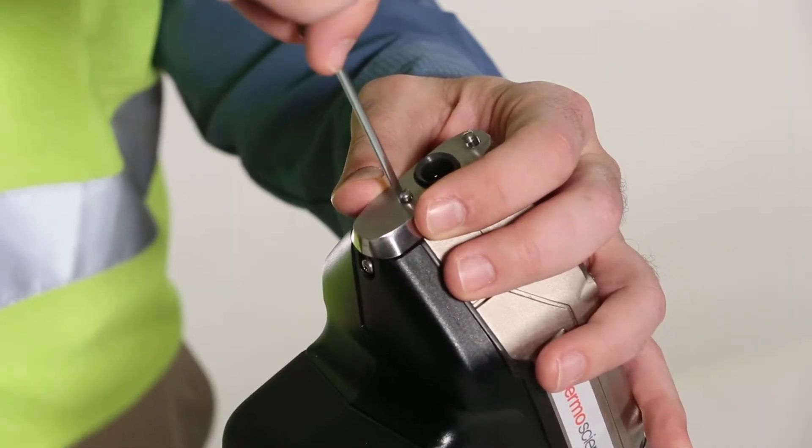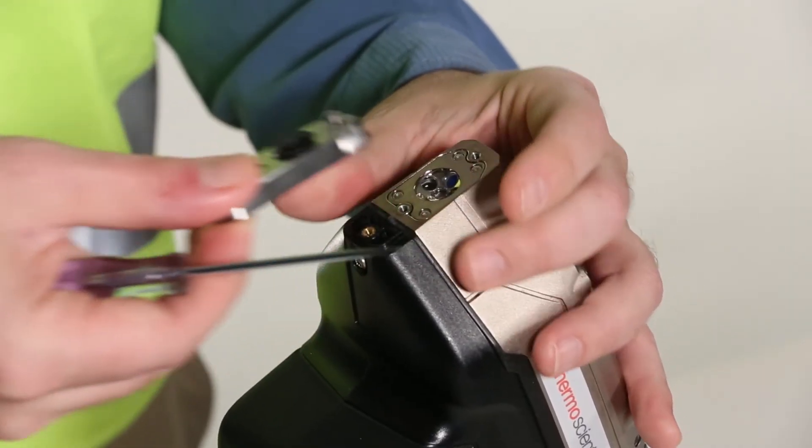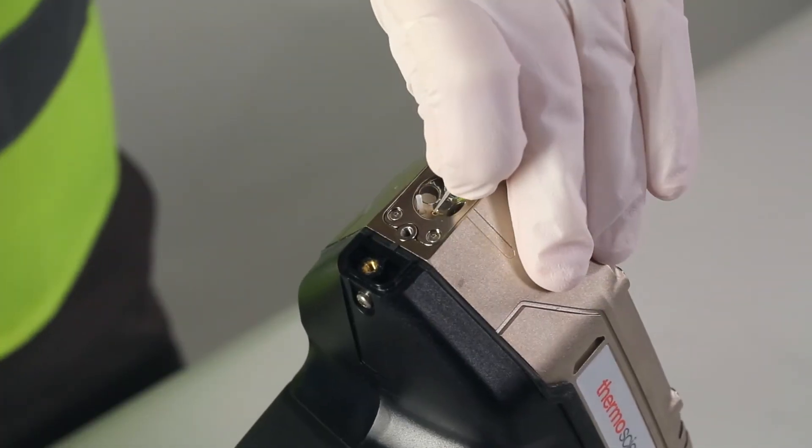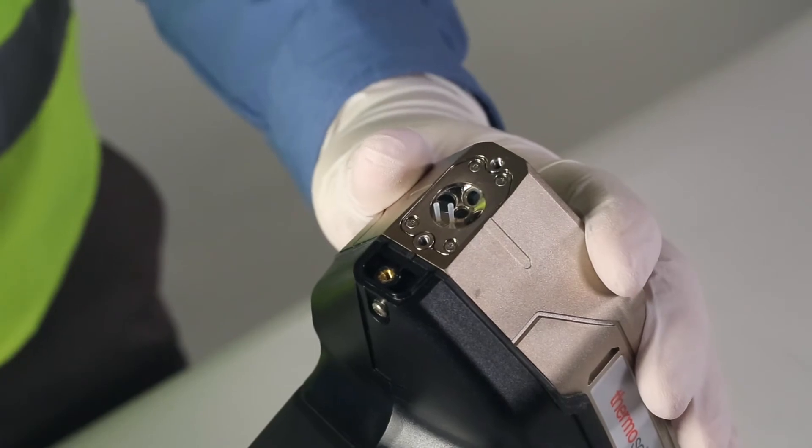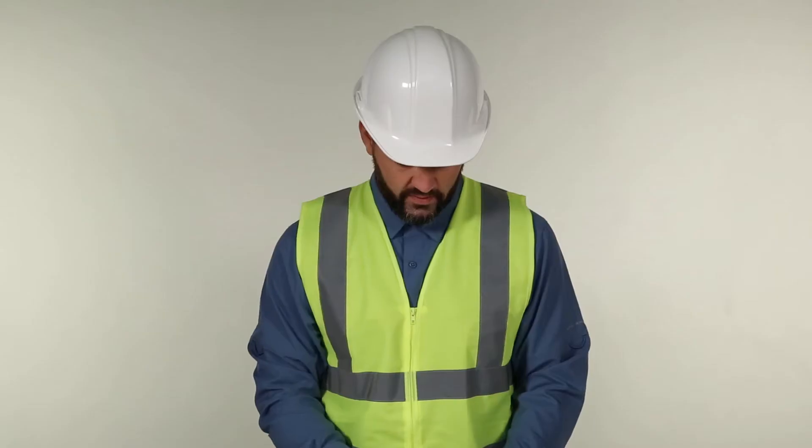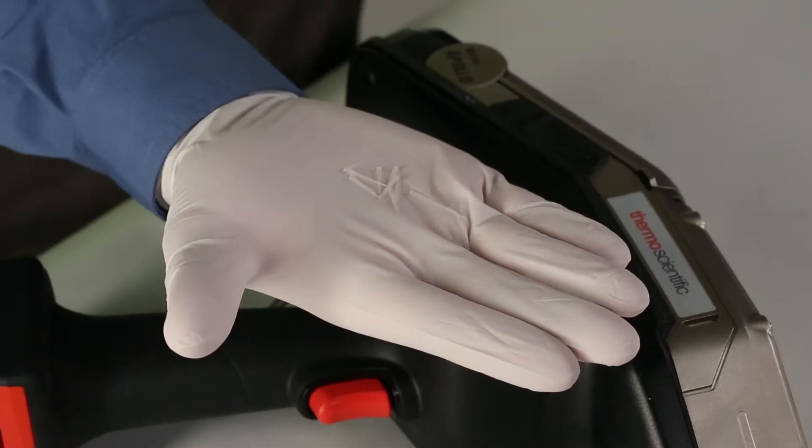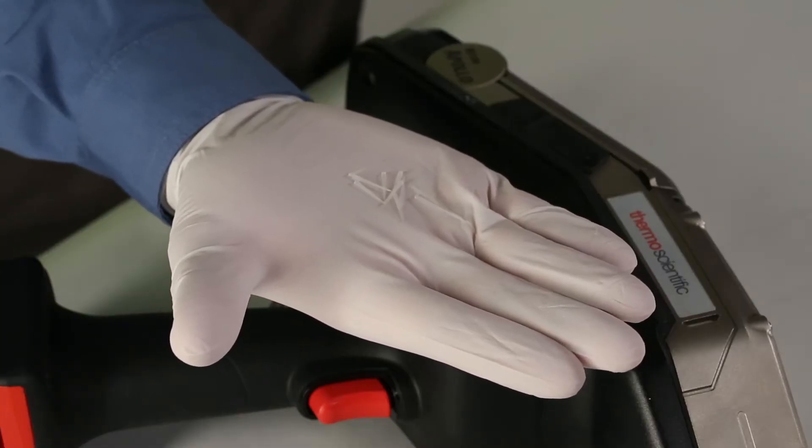Use a flathead screwdriver to remove the metal nose piece on the front of the instrument. Prevent any cleaning mixture from entering the analyzer by using the provided argon port plugs to seal the argon ports. Wear protective gloves when handling the plugs to avoid the introduction of contamination. Be sure to take special care of the plugs as they are small and easily lost.